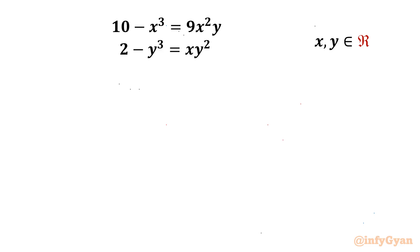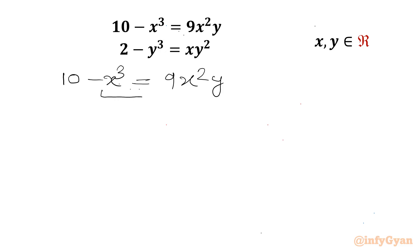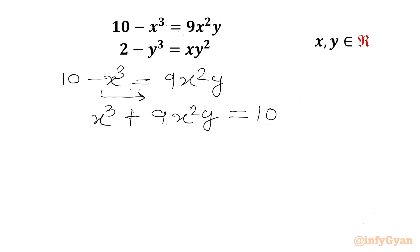Let's get started by considering our first equation: 10 minus x³ equals 9x²y. We can take minus x³ to the RHS, giving us x³ plus 9x²y equals 10. I will call this equation 1.